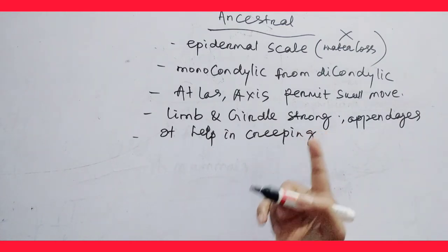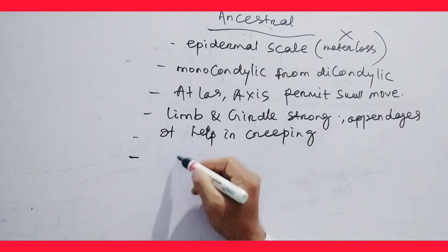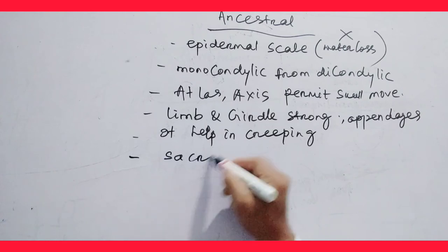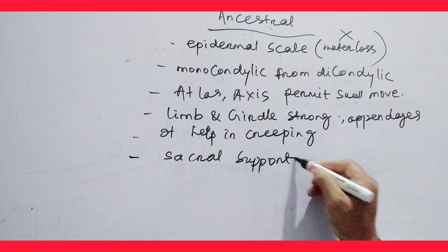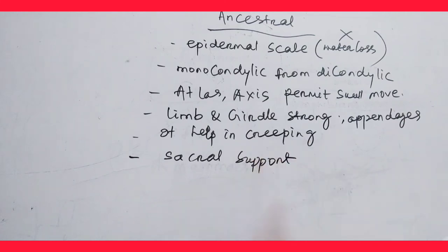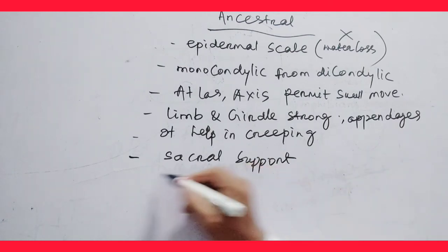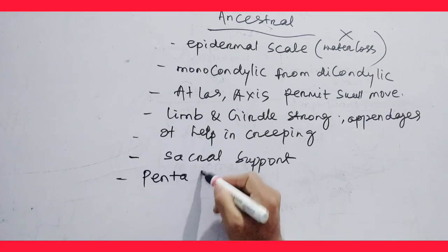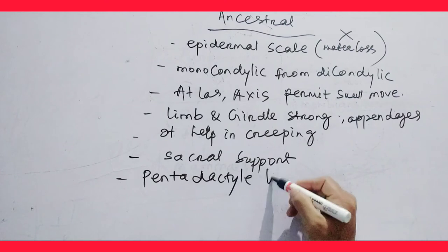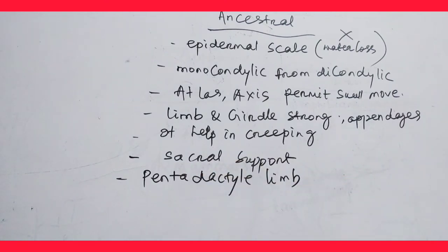The vertebrae fused at the sacral region to provide sacral support — support by fusion of two bones. The limbs are pentadactyl, meaning penta — five digits in the limb.